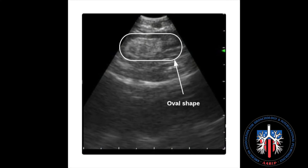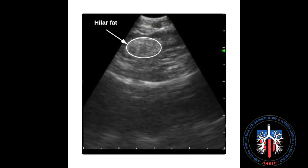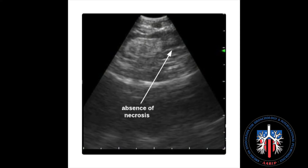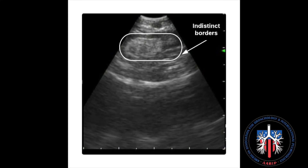Features of a benign lymph node include oval shape, hylar fat, absence of necrosis, and indistinct borders.